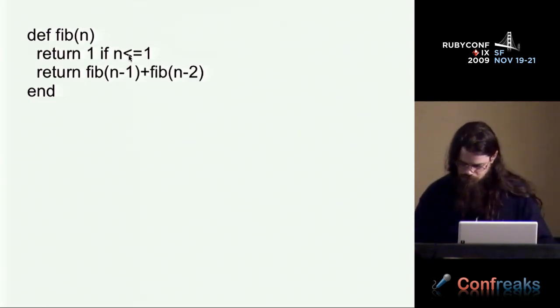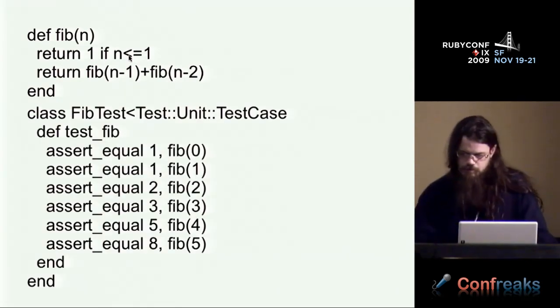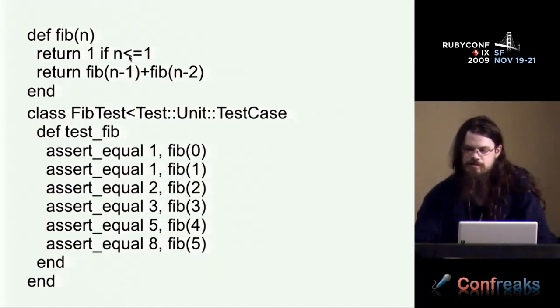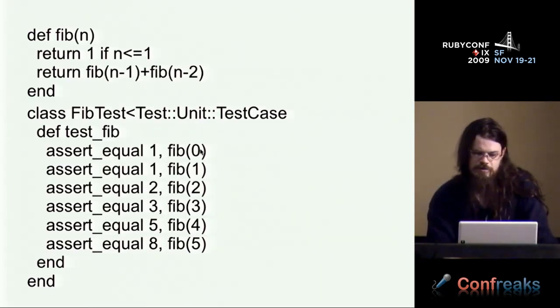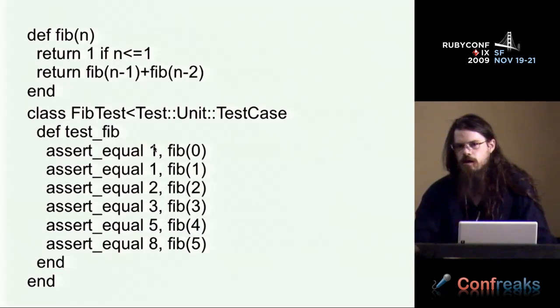But then there was a breakthrough. In Ruby we have this tradition of writing tests. Ruby's the most test-heavy language that I've ever encountered. And so here's an example test for the Fib method. Notice something very interesting about this test. The arguments to Fib in the test are all integers. Likewise, the returns of Fib are all integers.